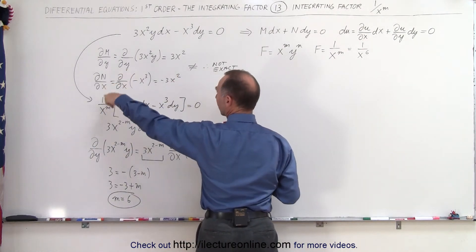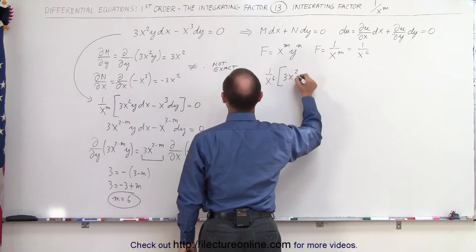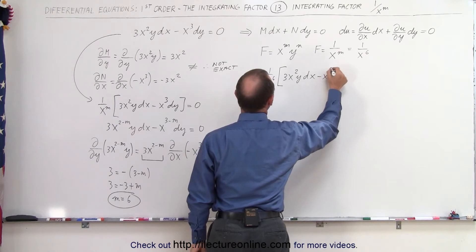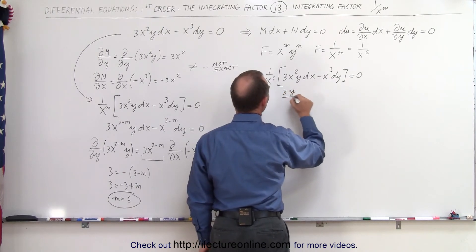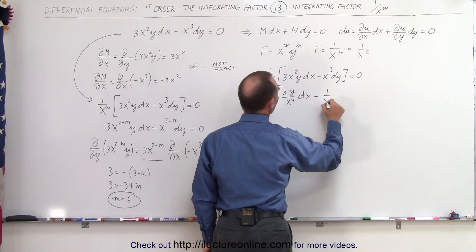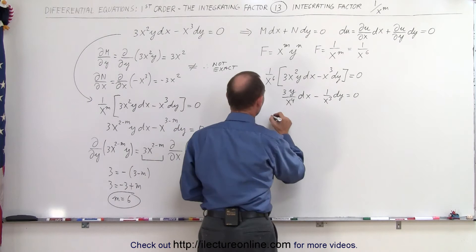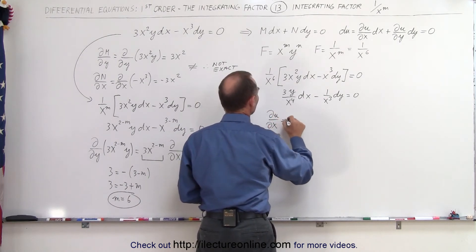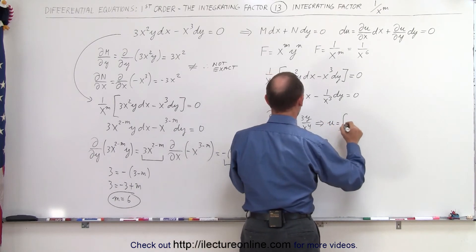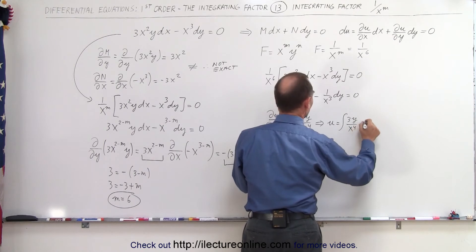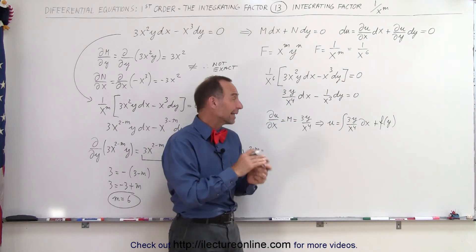Taking our equation and multiplying by 1 over x to the 6, we get 1 over x to the 6 times 3x squared times y dx minus x cubed times dy equals 0. Assuming this is now an exact equation, we find the solution. The partial of u with respect to x equals M, which equals 3y over x to the 4th, so u equals the integral of 3y over x to the 4th dx plus some function of y, since y is treated as a constant.